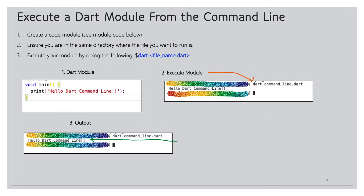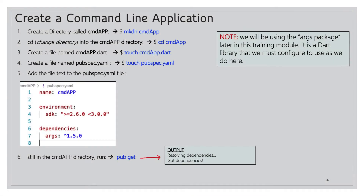You create your module with a main function and a print statement inside its body. Make sure you're in the same directory as the file you want to run, then execute it by typing `dart` followed by the full file name. If it's not in the same directory, you can use the full relative path. In our case the file is called `command_line.dart`, so we run `dart command_line.dart` and the output of the print statement appears on the next line.